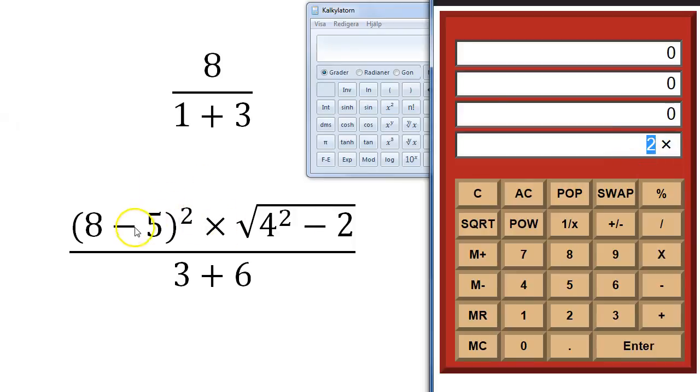Here we have a more complicated expression, as you can see here. But it's not that difficult when you use an RPN calculator as it would have been using, for example, this calculator.